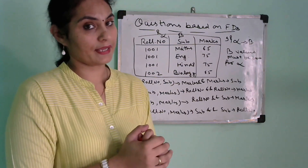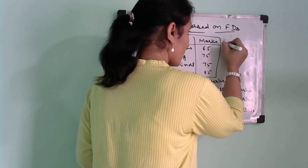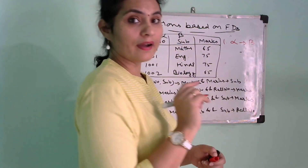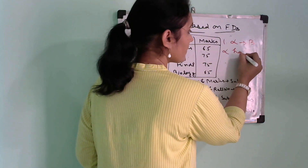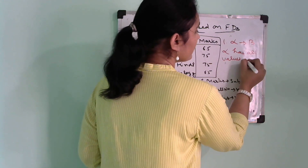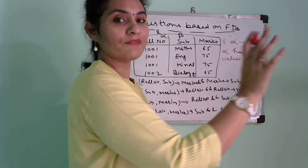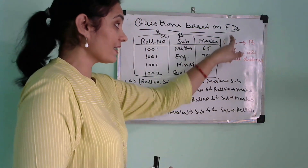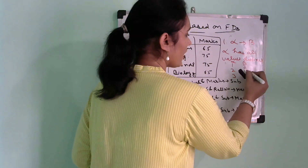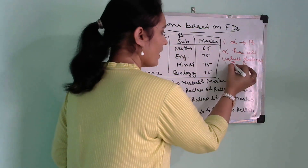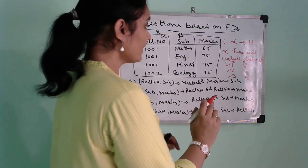Here is the first trick: for alpha to beta, if alpha has all distinct values, then the functional dependency is automatically valid. You don't need to check beta at all. For example, if alpha is 1, 2, 3 (all different), and beta is A, A, B — it doesn't matter; the FD holds good.